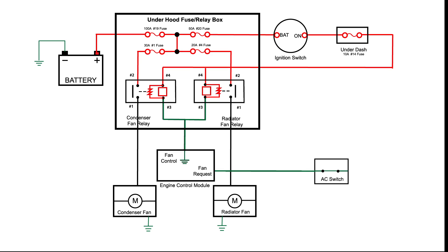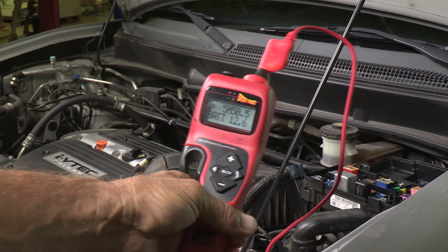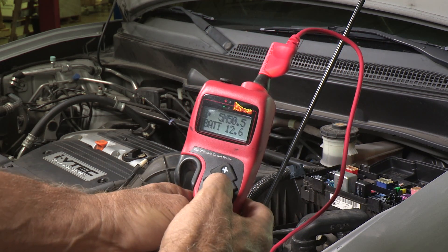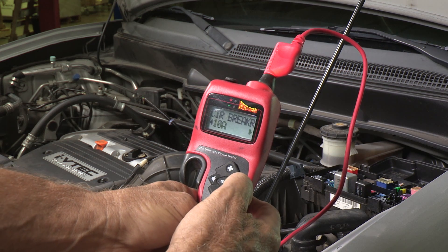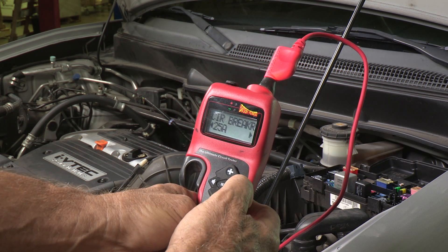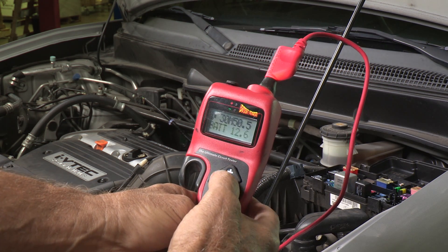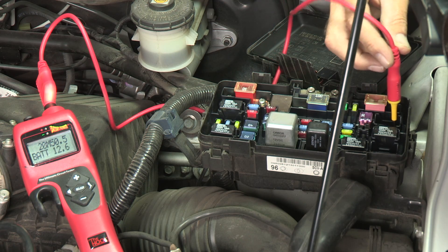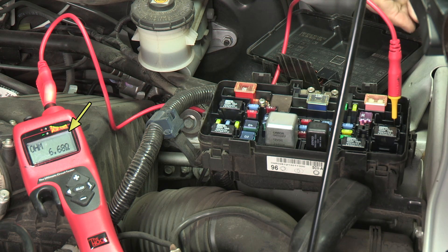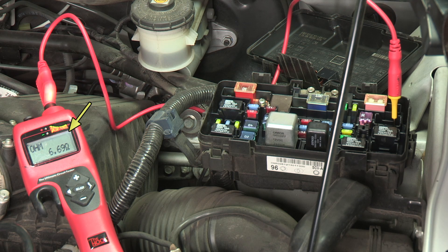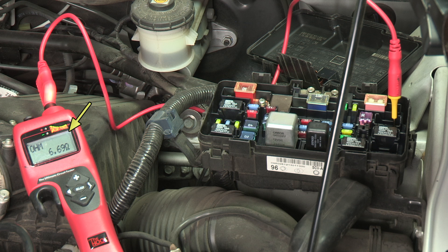Condenser fan relay socket terminal number one supplies power to the fan motor when the relay is energized. Let's test this now. Set the hook's circuit breaker setting to match the fuse rating for this circuit, which is a 30-amp fuse for the condenser fan. Probe terminal number one. The hook will instantly display the resistance of the fan motor. This reading tells us that there is resistance through the fan motor and our fan motor is not open or shorted.